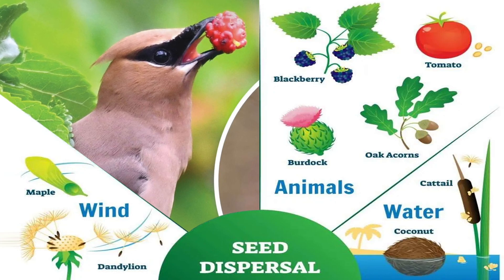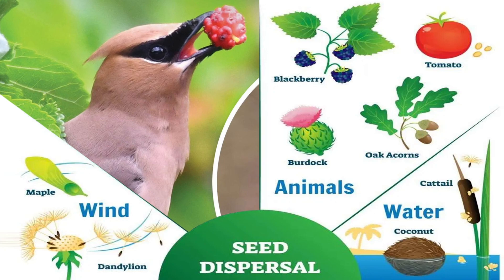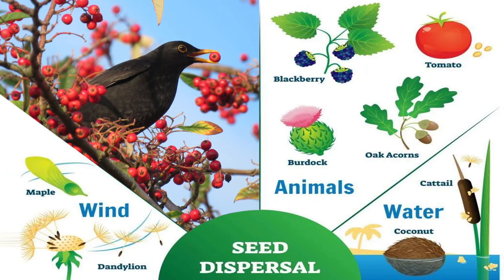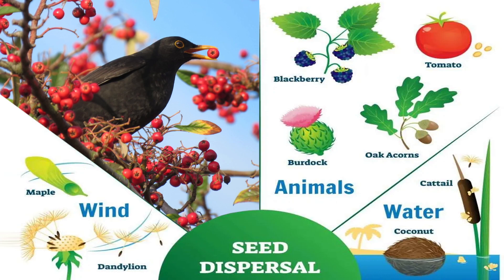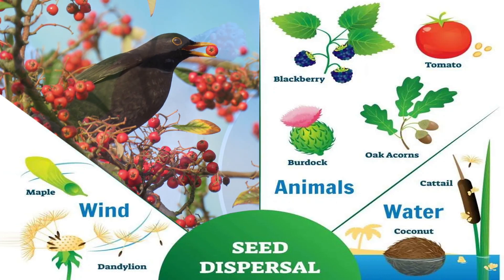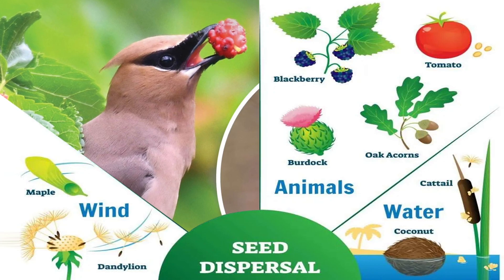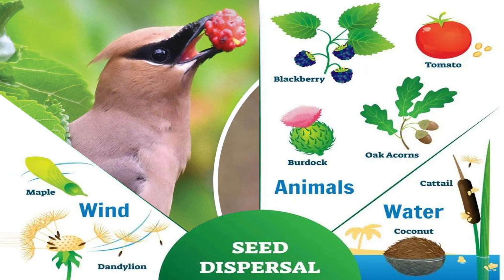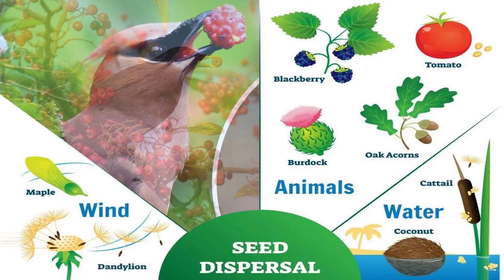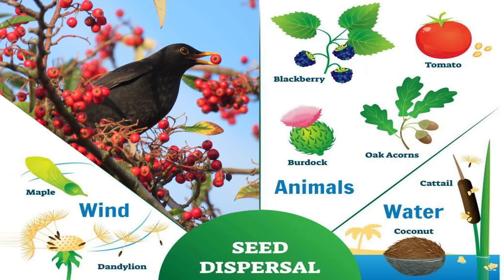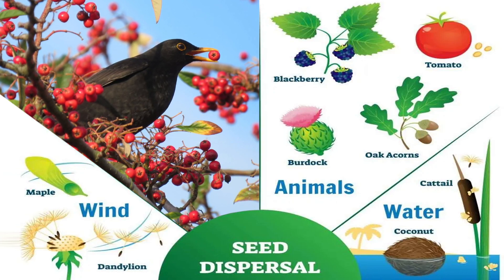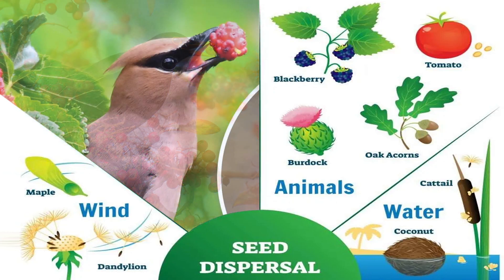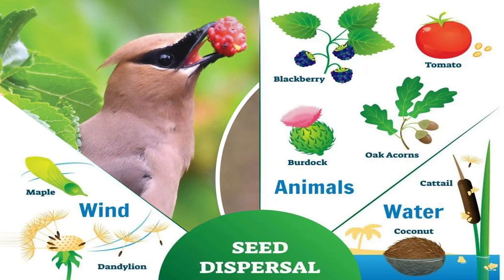Some seeds like burdock and cockle — which we can also call xanthium — have hooks or spines. They get stuck to the fur and skin of animals or clothes of people and are carried away. Some plants have seeds with hooks or spine-like structures that stick to an animal's skin or people's clothing, and thus they separate from their parent plant. Some birds swallow seeds which come out unchanged in their droppings, and some seeds get stuck to their beaks while eating fruits. When they rub their beaks on tree bark, the seeds fall down and later grow into new plants.